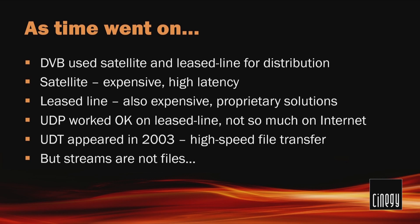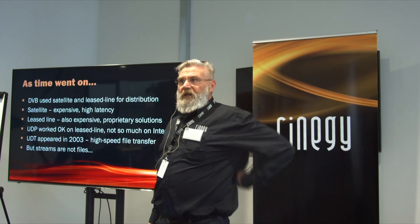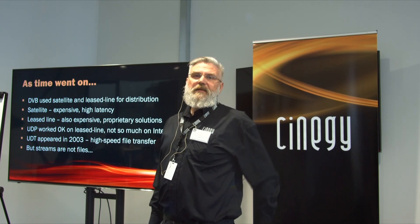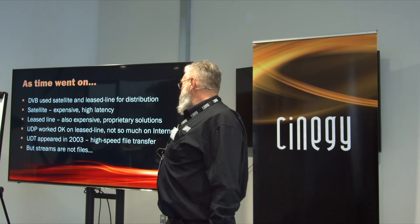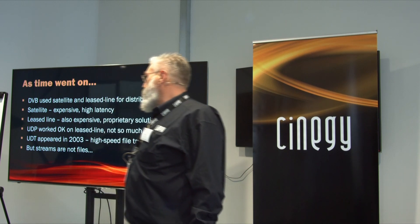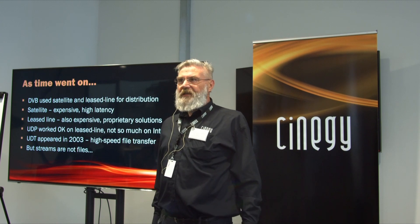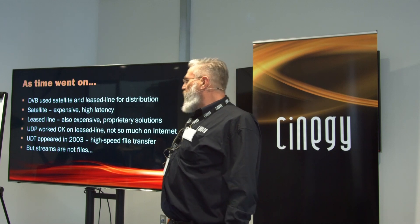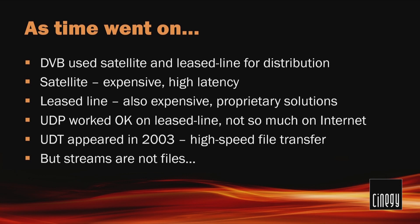DVB settled into a situation where it was being distributed over satellite or via leased lines using private WLANs or proprietary solutions. Satellite has a second-and-a-half return trip, so latency is always a factor. Leased lines have less latency but are expensive and usually involve proprietary solutions. UDP worked okay on leased lines, but over the internet with all the noise and chatter, it didn't work so well. UDT was a big step forward in the early 2000s, when some clever people in Chicago started throwing terabytes of data across transatlantic lines — between Chicago and Amsterdam — but that was a file transfer setup, and streams aren't files, though it got people thinking.